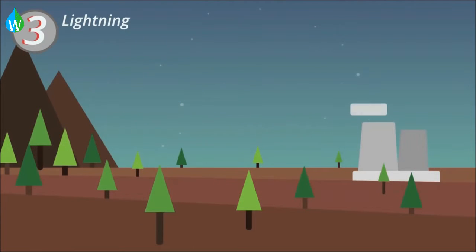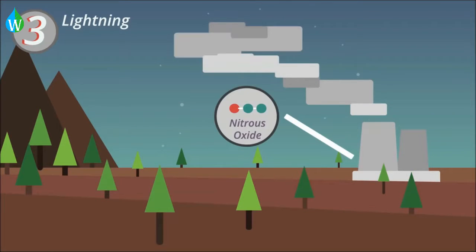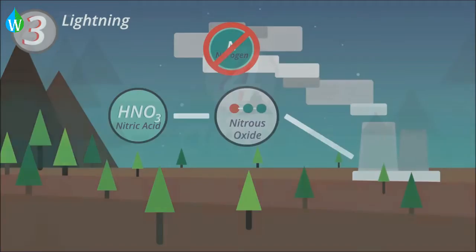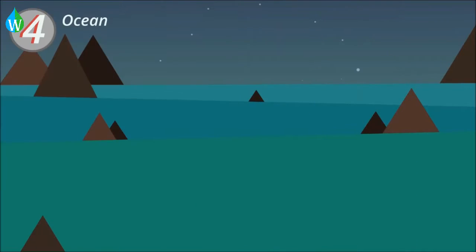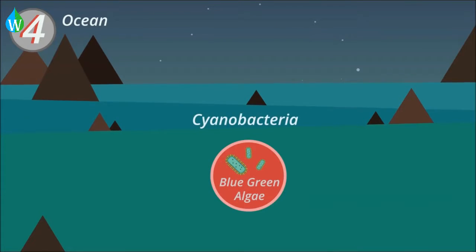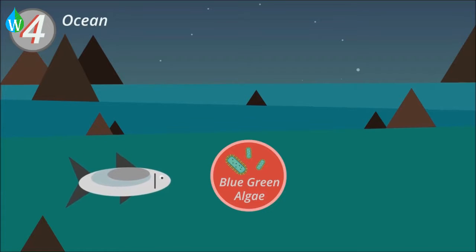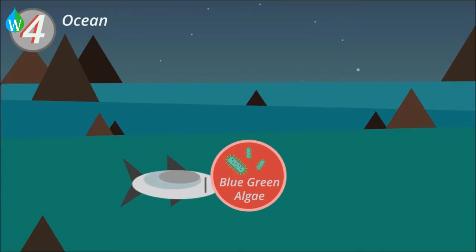Burning fossil fuels also adds nitrous oxide to the atmosphere, resulting in nitric acid, but this is of course not a natural way of nitrogen fixing. And finally, in the oceans many species of blue-green algae, also called cyanobacteria, can fix nitrogen. This then provides sources of nitrogen to aquatic animals, and the nitrogen goes around a similar cycle to what happens on land.